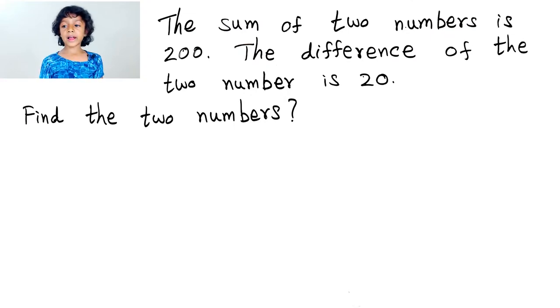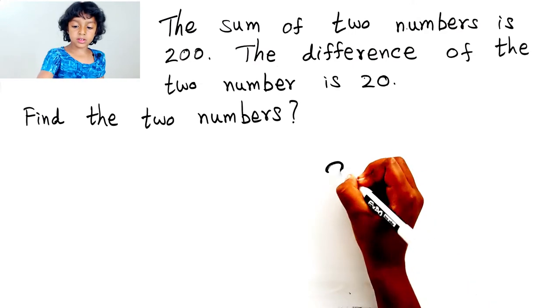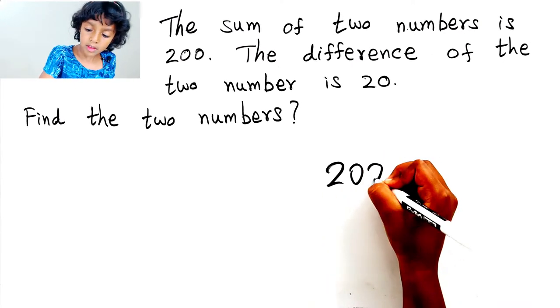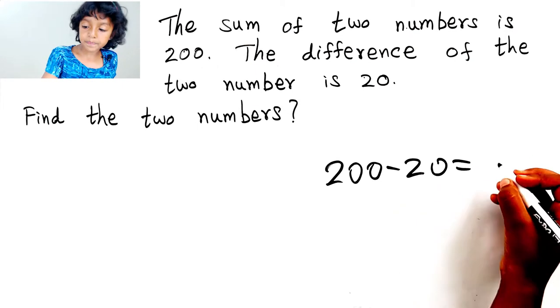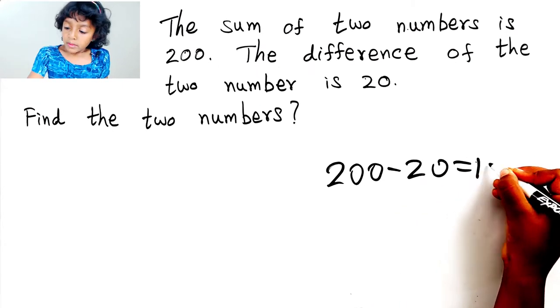So, to find it, let's do this. Let's take the extra 20 out. So 180. Let's put 180. So 200 minus 20 equals 180.